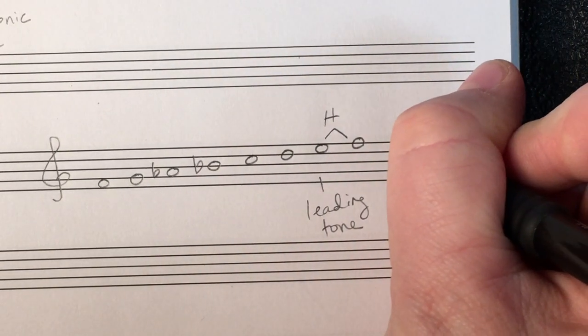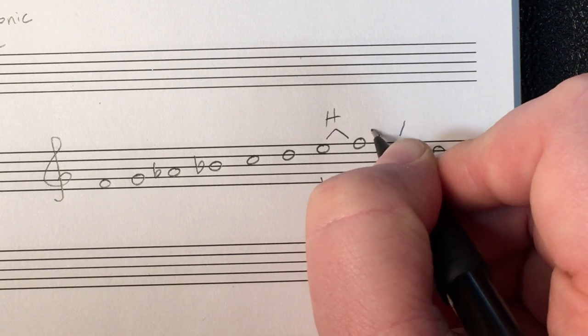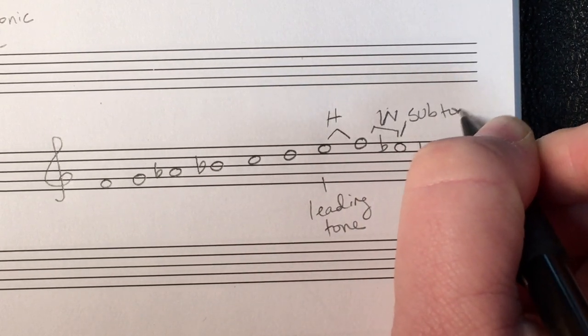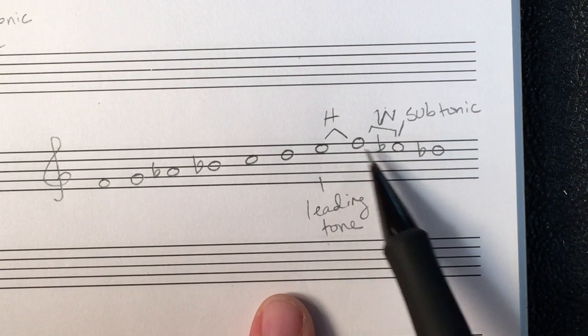Do be aware that the melodic minor scale goes back down. On the way down it reverts to natural minor, so the seventh scale step is now a whole step below tonic — making it the subtonic. So in melodic minor, you have the leading tone going up and the subtonic going down. You have to be aware that there are two different names for the seventh scale step in a melodic minor scale.